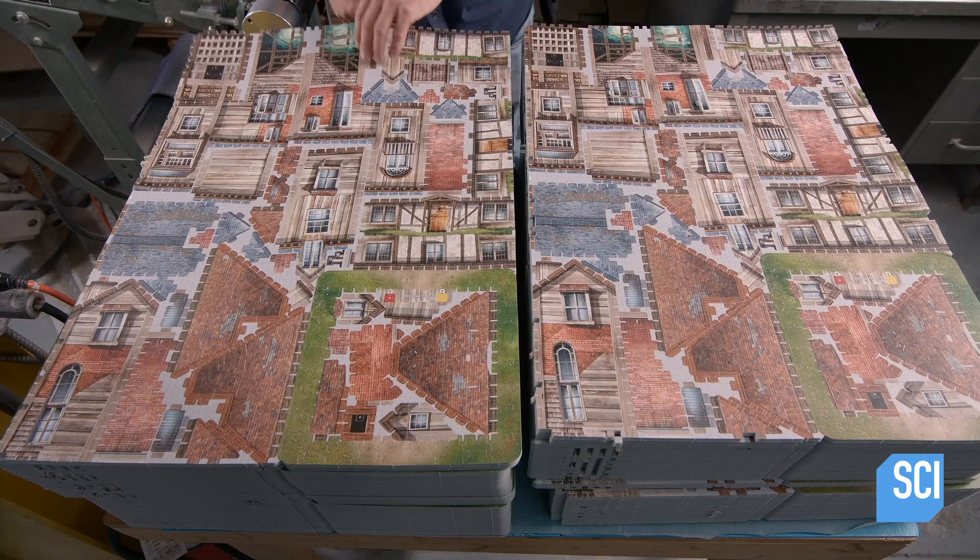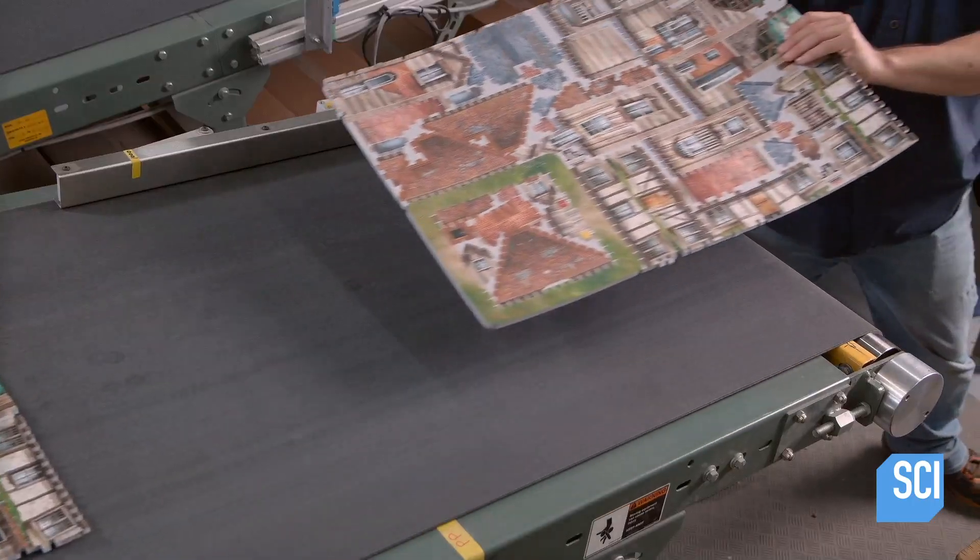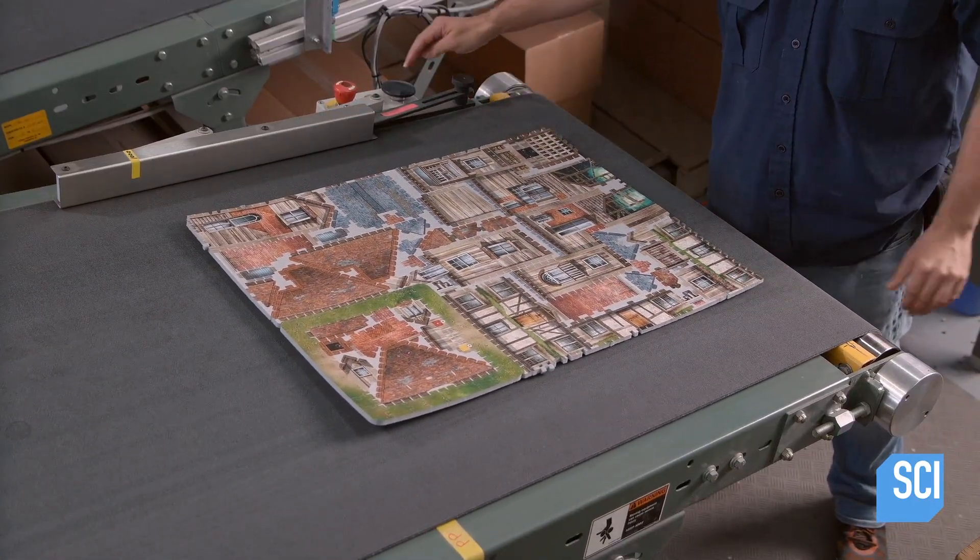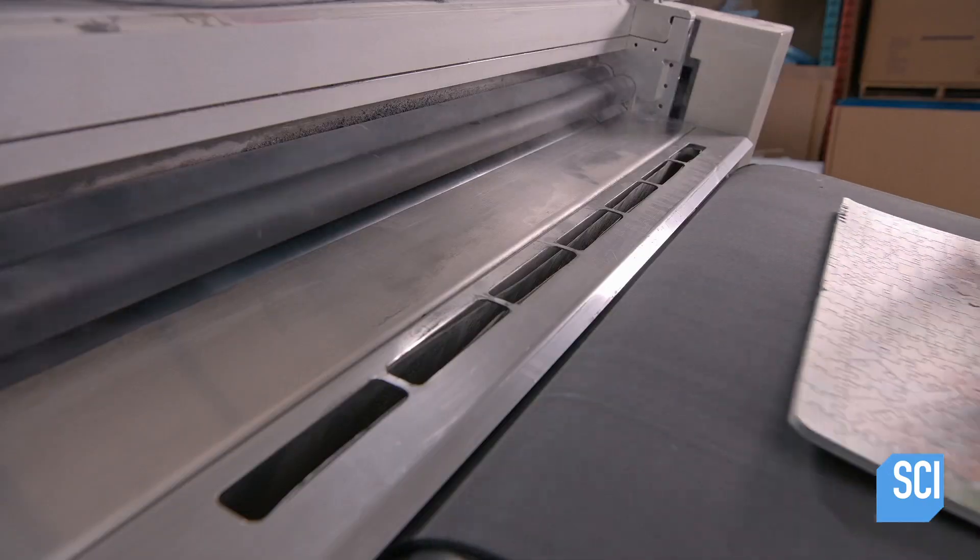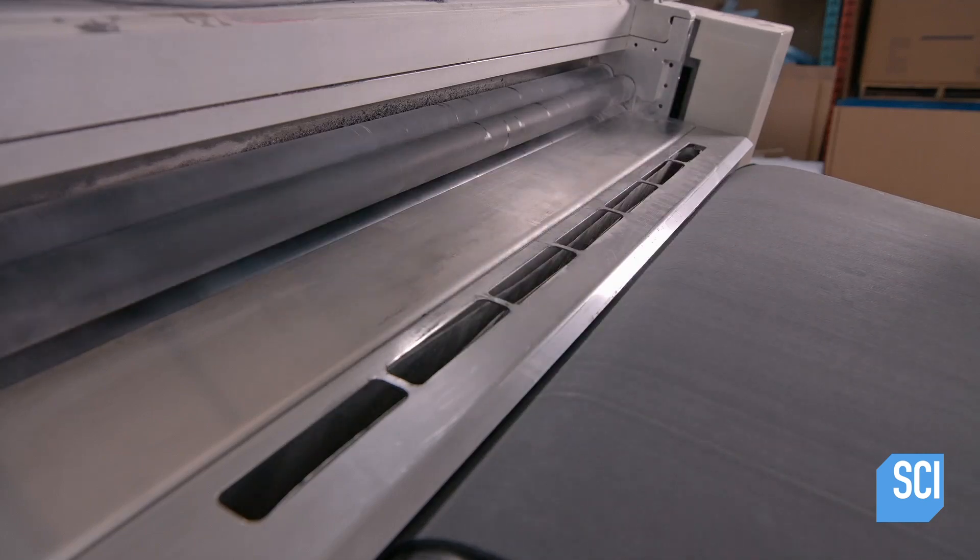If the sheet has two or three puzzles printed on it, the cutting die separates them. Then a technician places the puzzle on a semi-automatic conveyor belt that moves it to the dismantling machine.